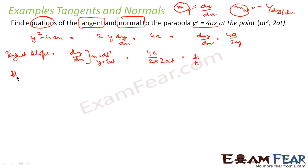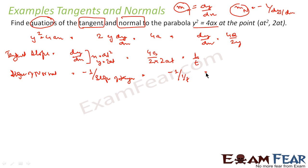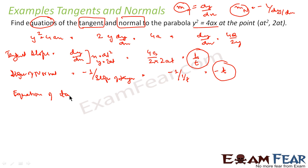Similarly, my slope of normal is nothing but minus 1 divided by the slope of tangent, which is nothing but −t. So I have the slope of normal and slope of tangent. I have to find the equation of normal and tangent, so let's find the equation of tangent first. The equation of tangent is y − y₀ = m(x − x₀), the general form.